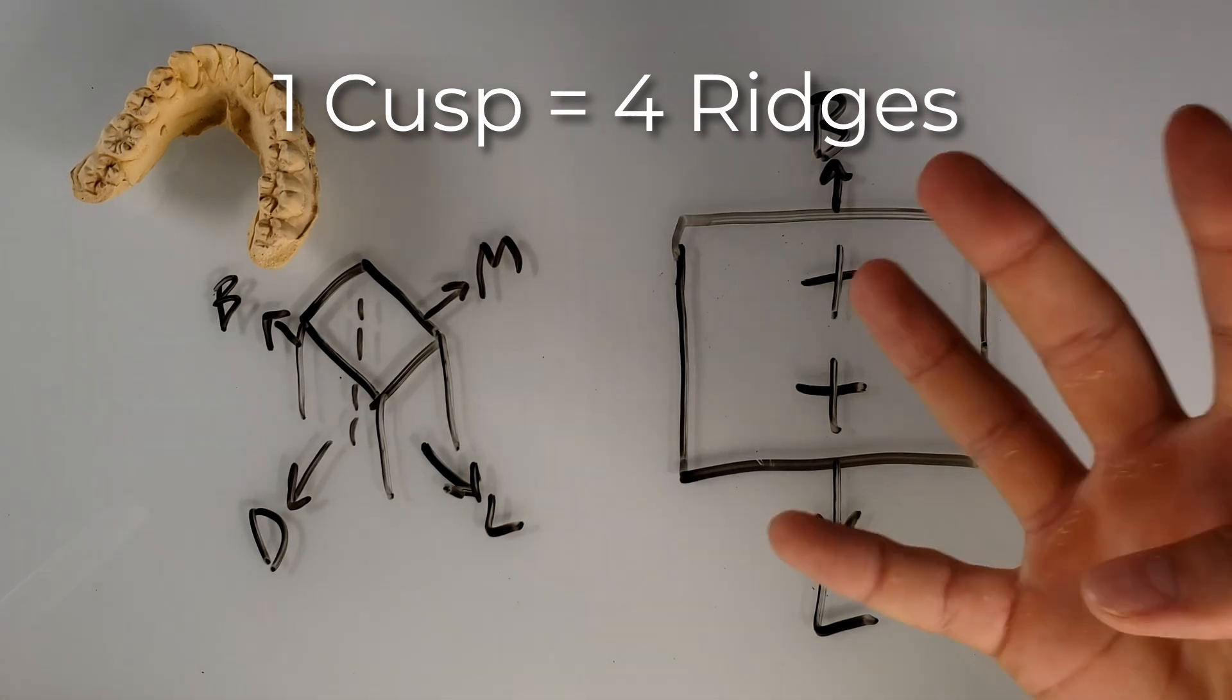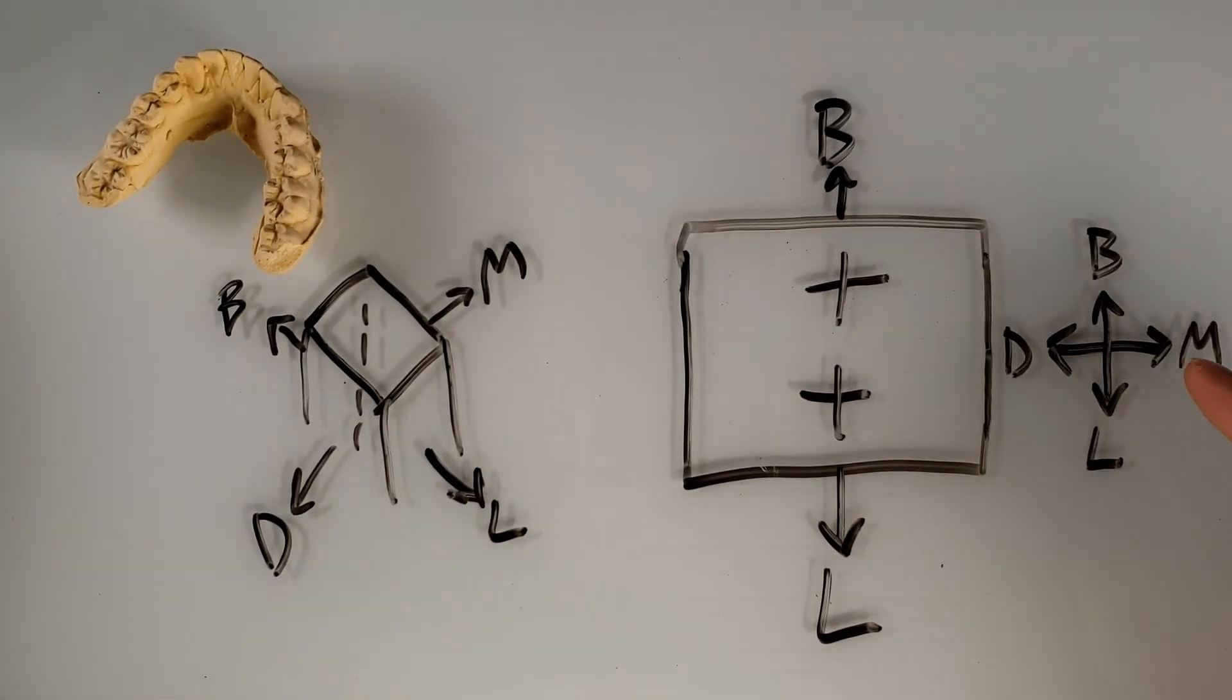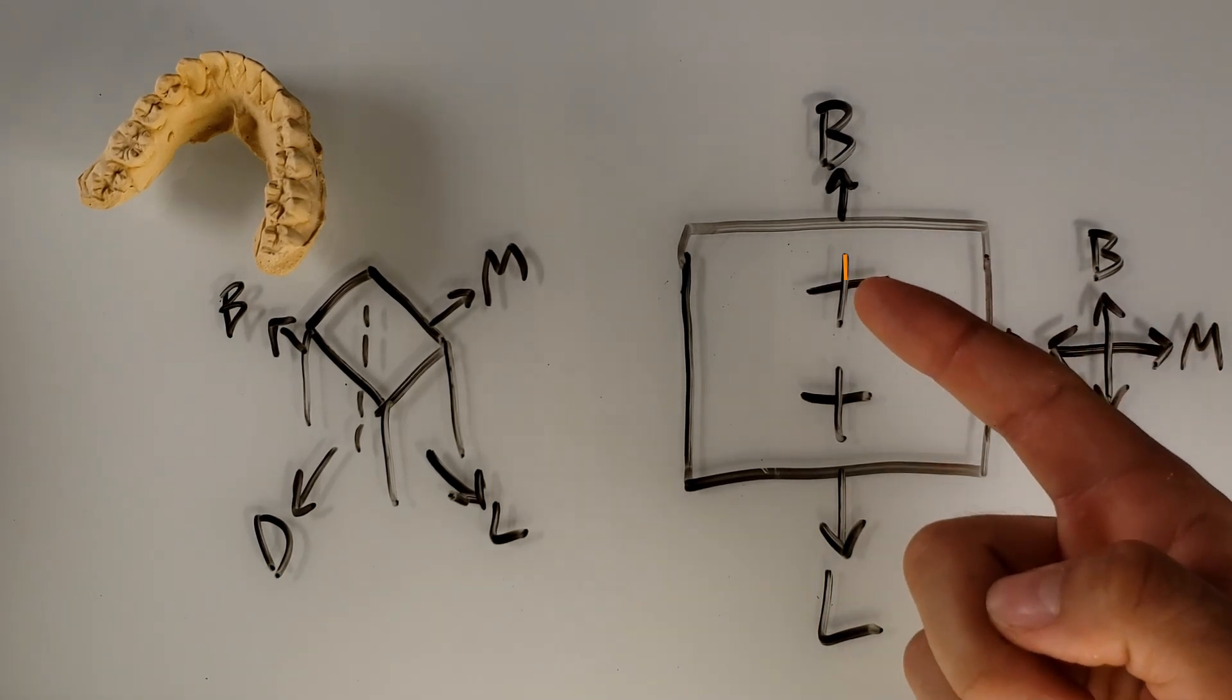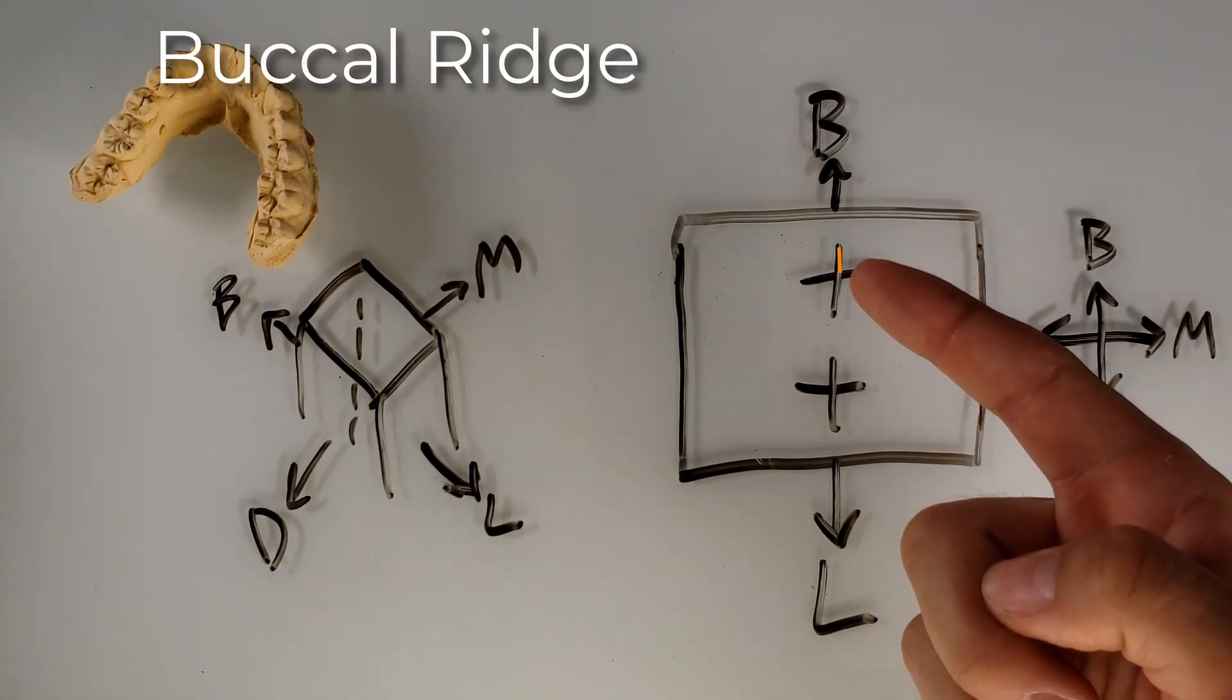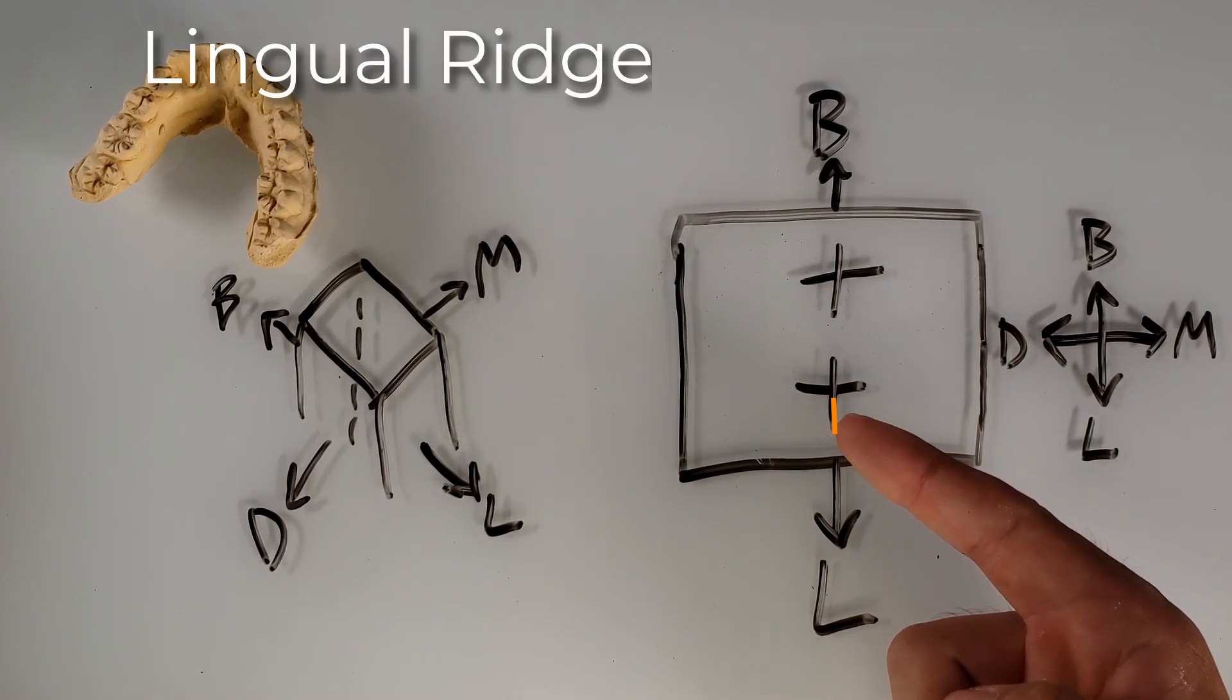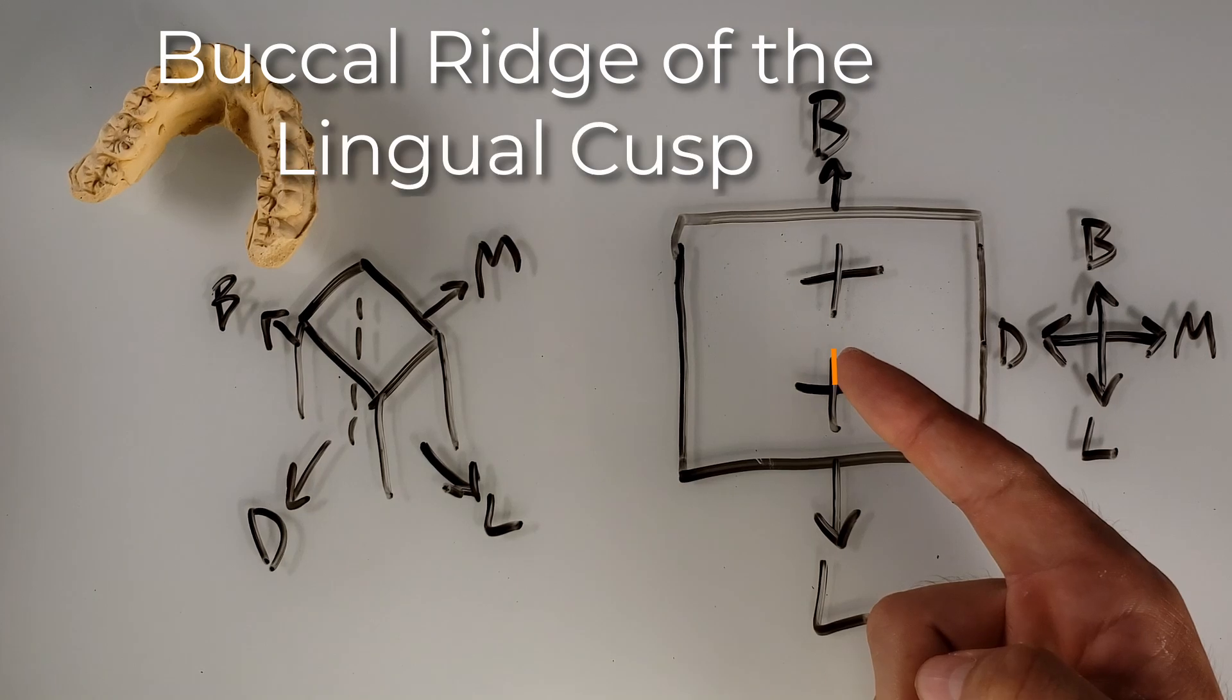Now when we have one cusp, we have four ridges. Use this compass. So what you see is this compass corresponds to each of these ridges. This would be the buccal ridge of the buccal cusp. This would be the lingual ridge of the lingual cusp. This would be the buccal ridge of the lingual cusp.